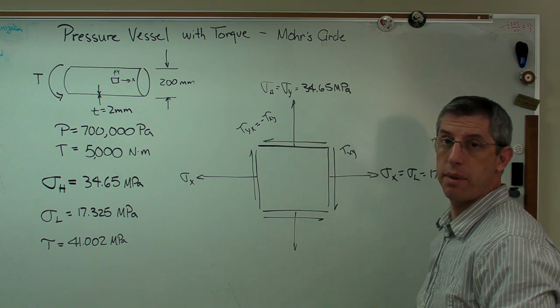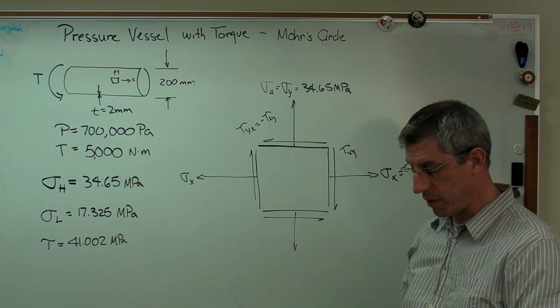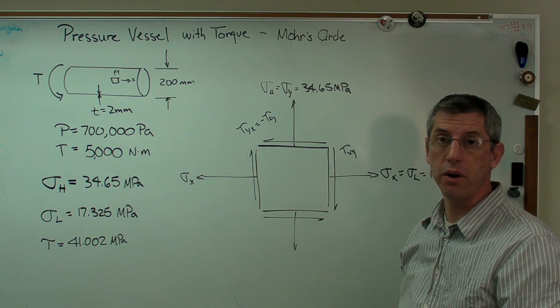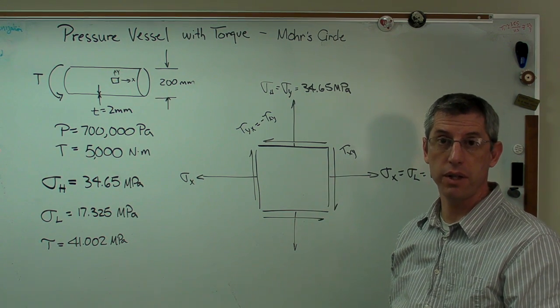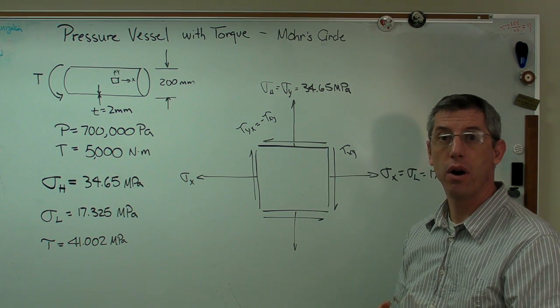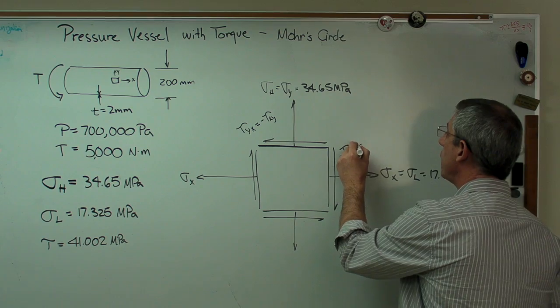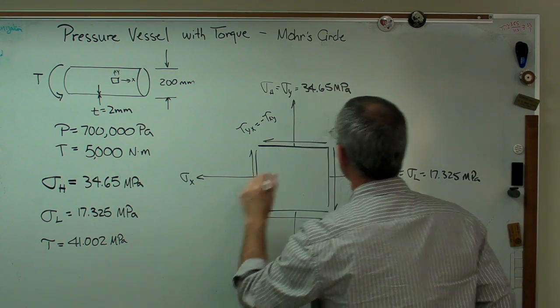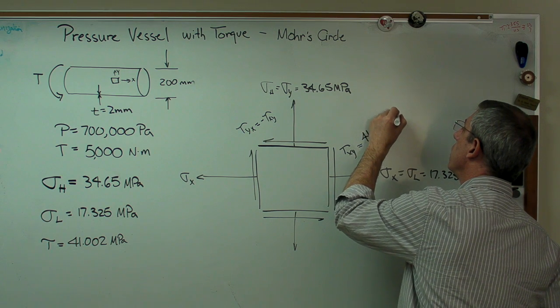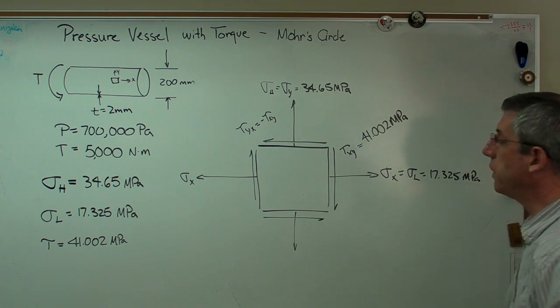These two are equal and opposite, because if they weren't equal and opposite, there'd be a net moment on this stress element, and it would want to turn. But the stress element has to be in static equilibrium. So tau xy and tau yx are equal and opposite. Now tau xy, we figured out there, is 41.002 megapascals.